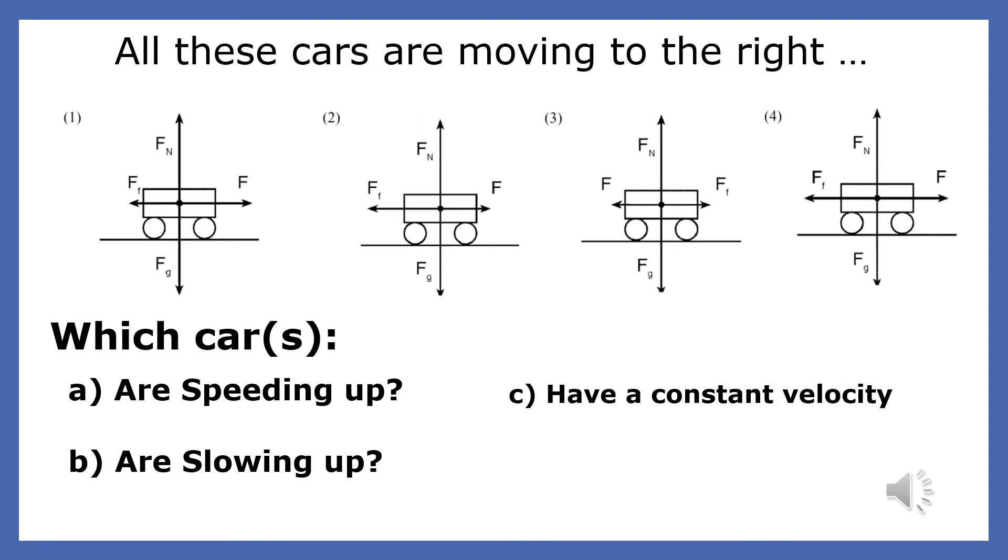All these cars are moving to the right. Which cars are speeding up? Which are slowing down? And which have a constant velocity? Well, car one is speeding up because the forward force is greater than the backward force. Car two is slowing down because the backward force is greater than the forward force. And cars three and four both have constant velocity because their forces are balanced. When the forces on an object are balanced, the acceleration is zero and they don't change their velocity.